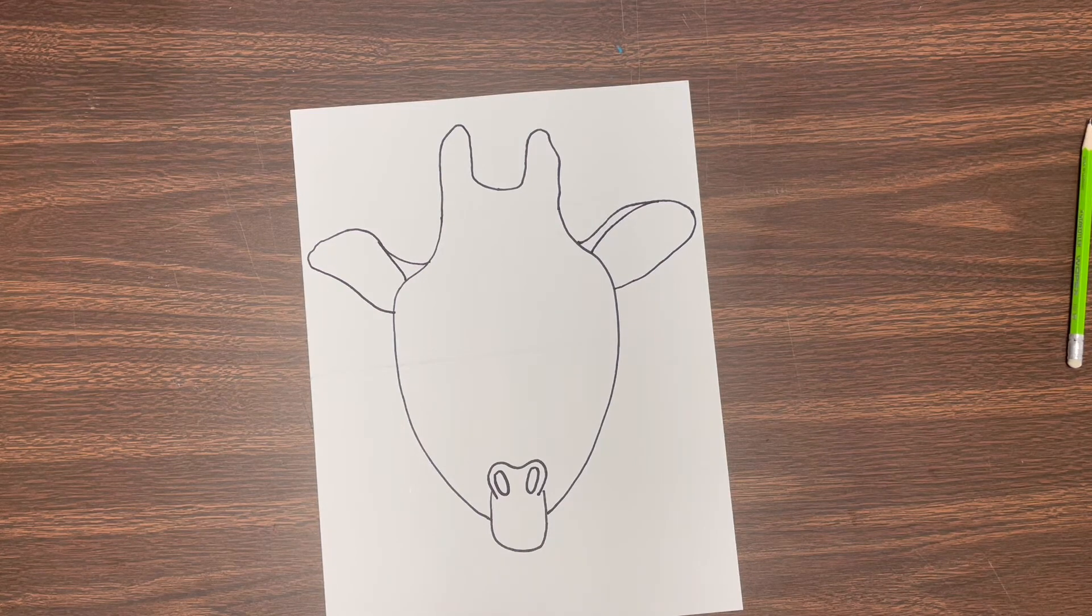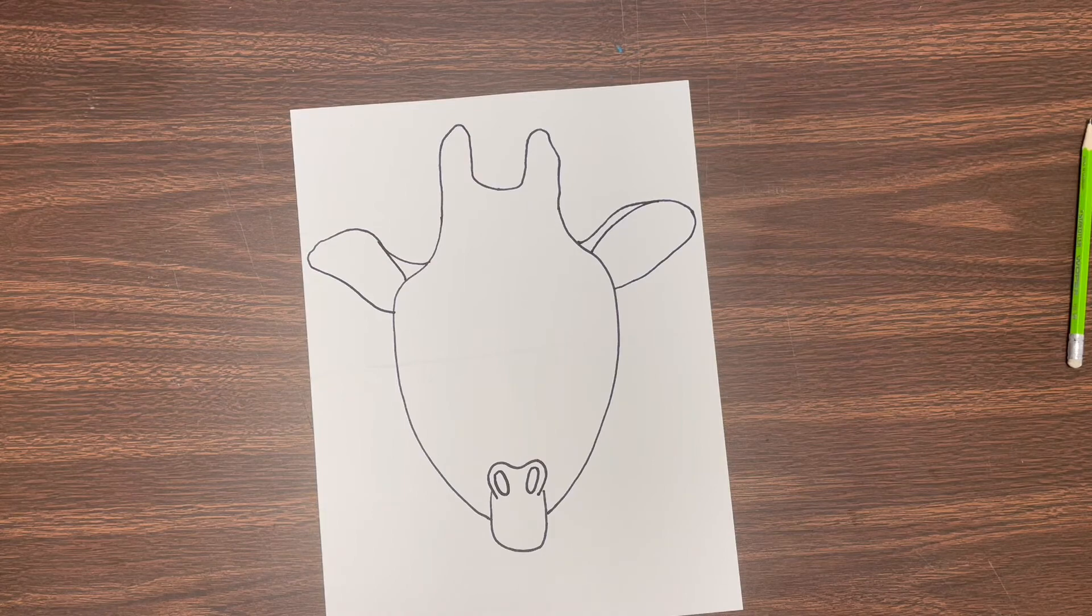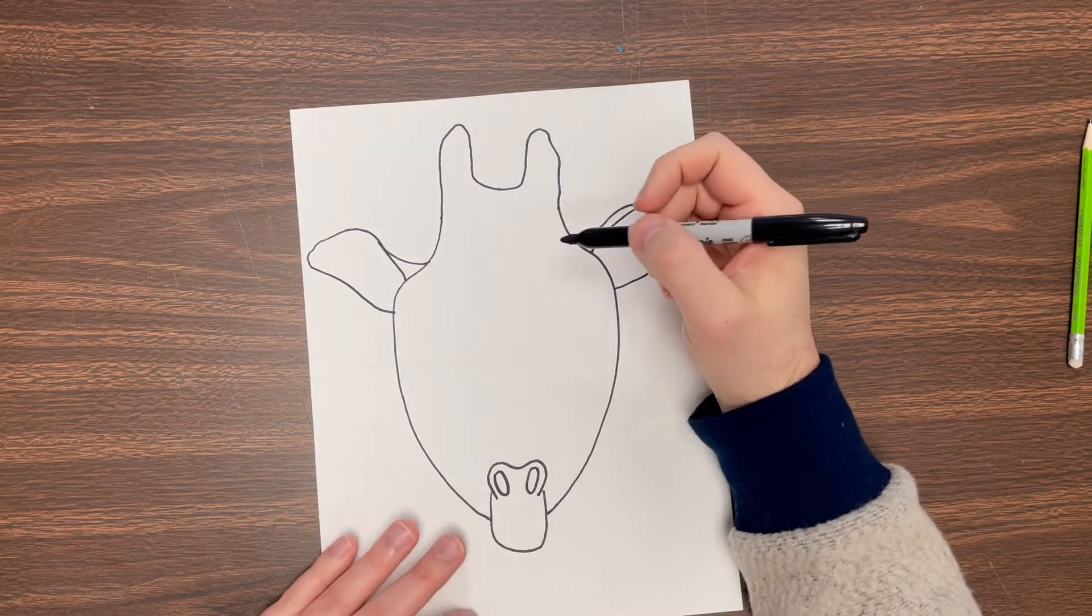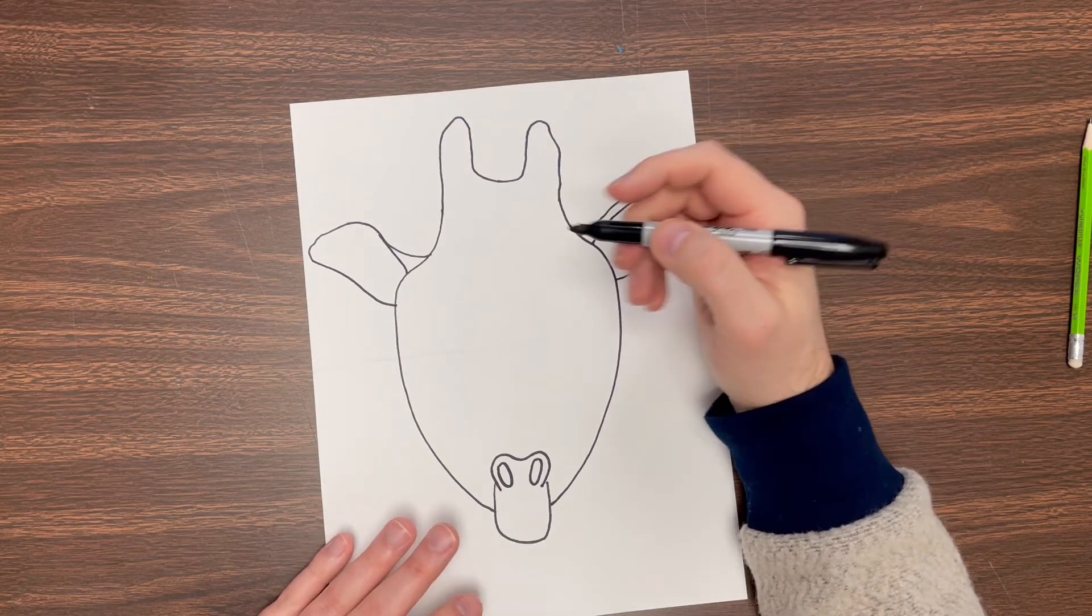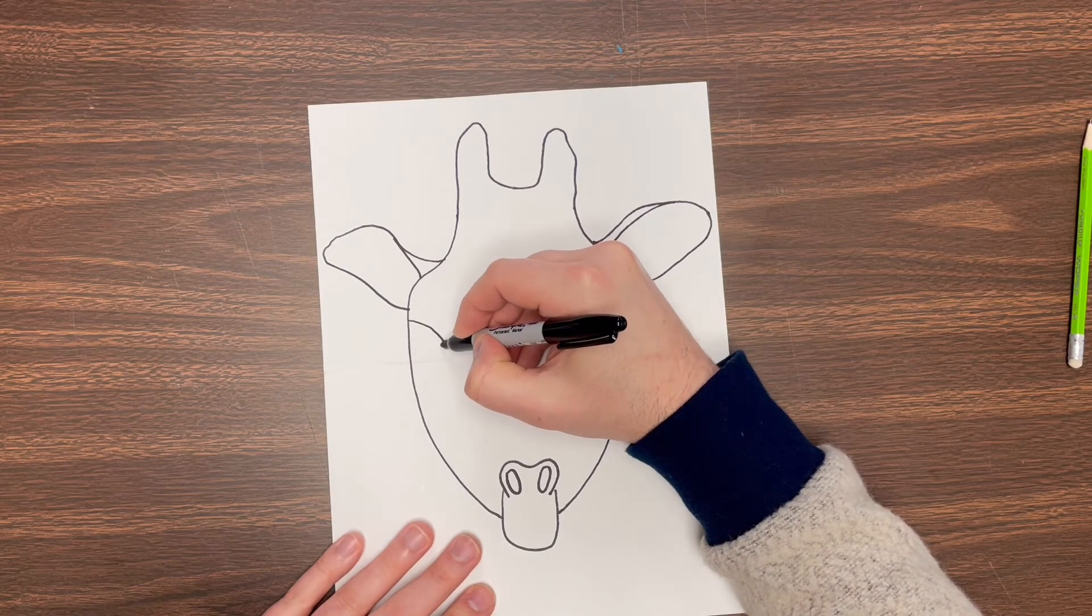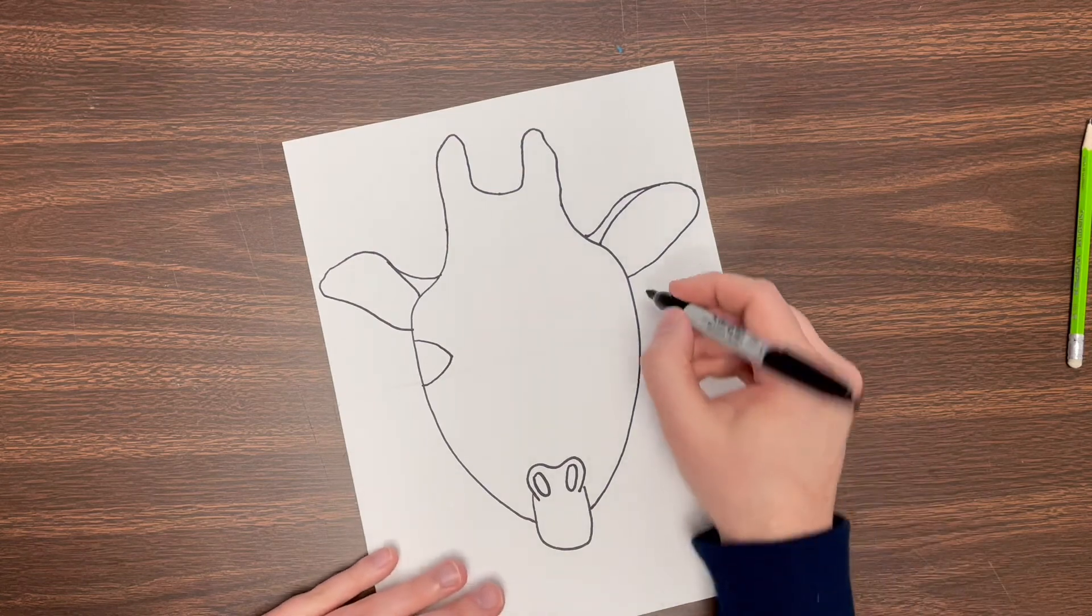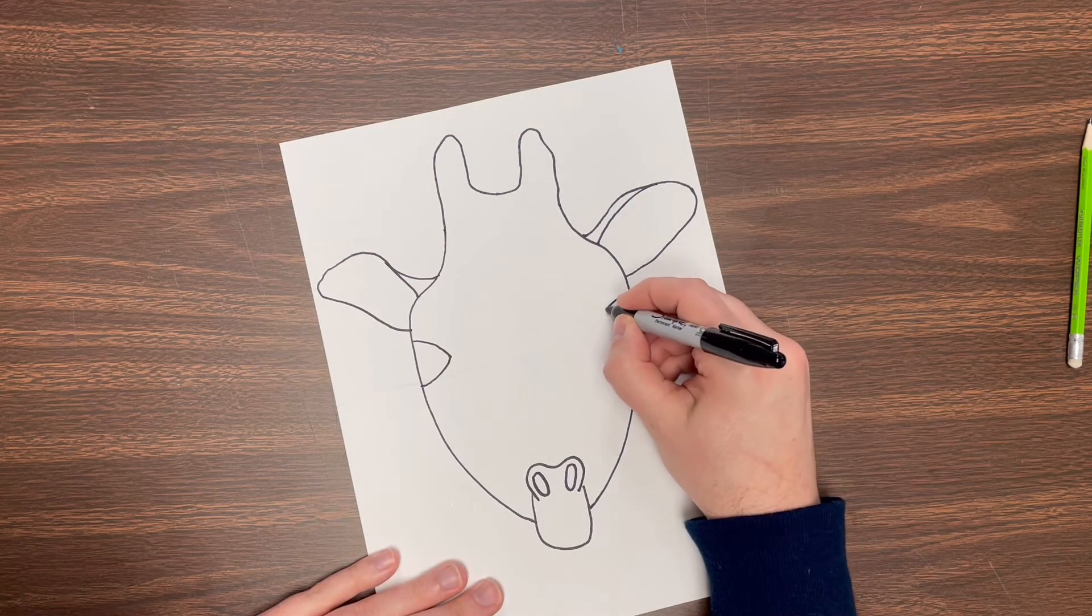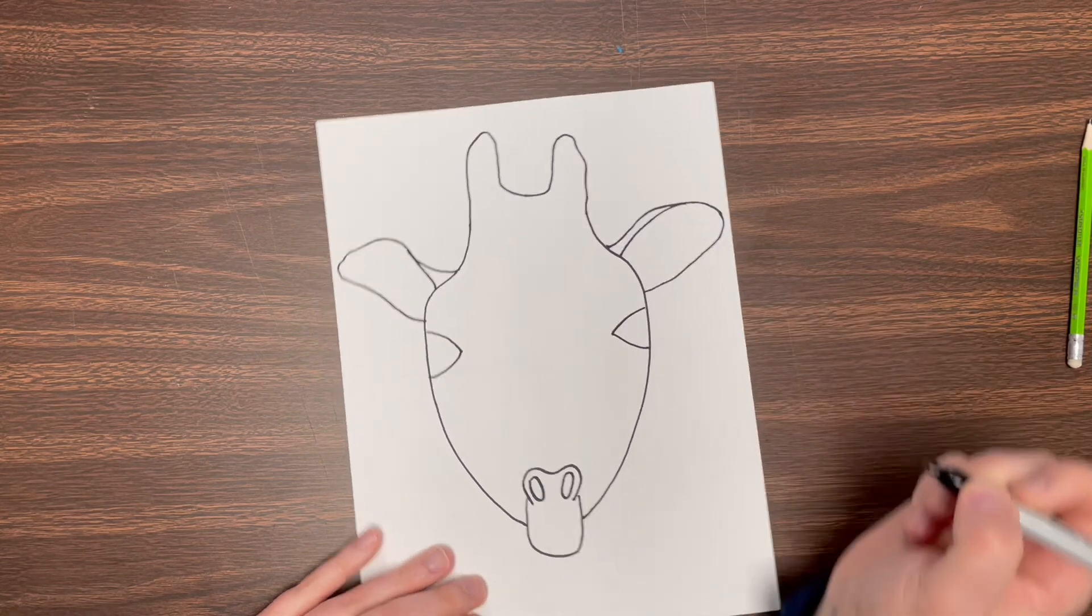Next we're gonna do the eyes just below that, and these are gonna be kind of oval shaped, a little bit pointed in the corner. They're gonna go kind of like this and they're probably gonna go right about to that middle point on the page.